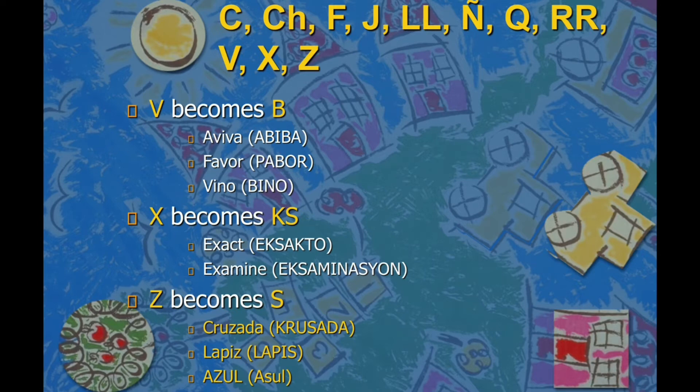Then Z becomes S — like cruzada becomes Krusada, and lapis. Azul becomes Asul — Asul is blue. But again, we sometimes relax the rule; we adopted the Spanish word azul and make it a Cebuano word, so from azul it becomes Asul. That is blue.